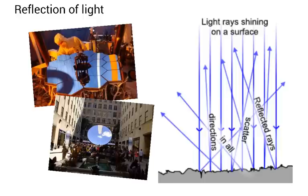Not all surfaces can be used as mirrors because most surfaces are actually very rough when you look closely at them. What happens is the light will come down and it will scatter off in all different directions, and that's not a good property for a mirror. We want the light to all move off in the same direction.